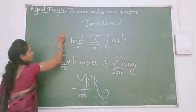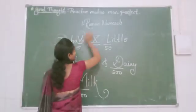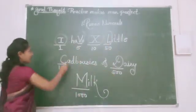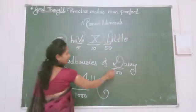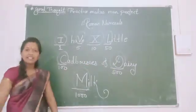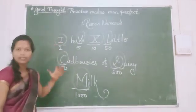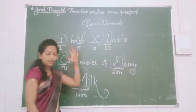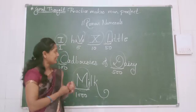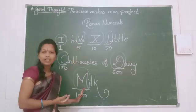So for 1 we use I, for 5 we use V, for 10 we use X, for 50 we use L, for 100 we use C, for 500 we use D, and for 1000 we use M. In this way we can easily remember our Roman numerals from 1 to 1000. Today we are learning how to write Roman numerals up to 1 to 20, and how to recognize or remember Roman numerals up to 1 to 1000.